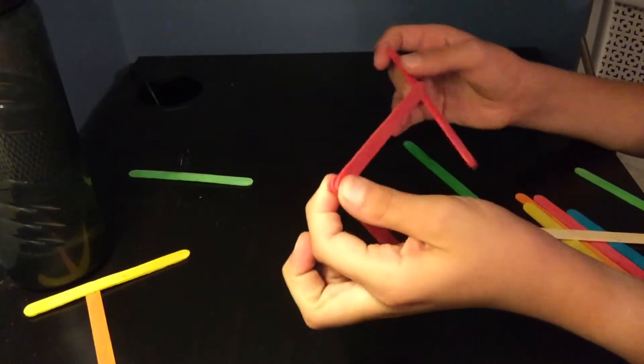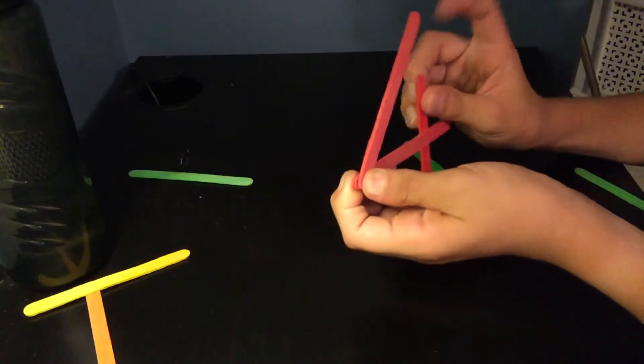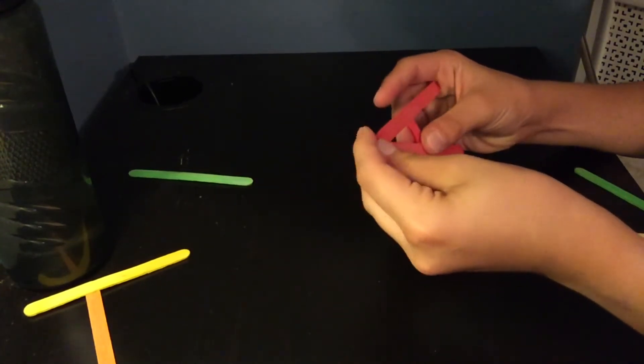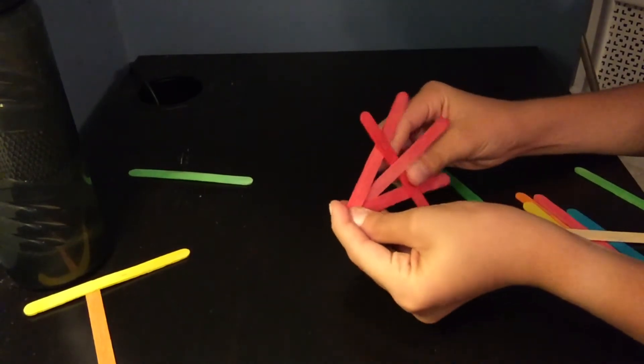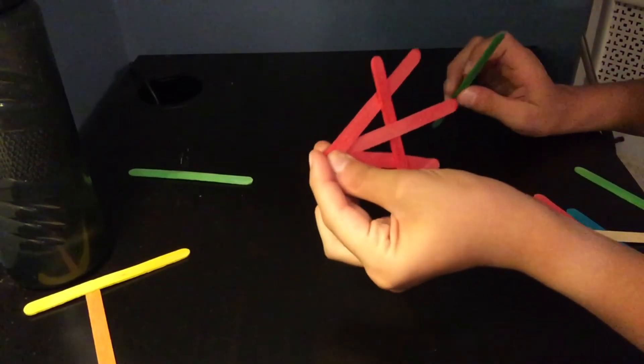You take another popsicle stick, you go over the first one, under the second one, and then over the third one. Hold the top at all times, otherwise it will disperse.